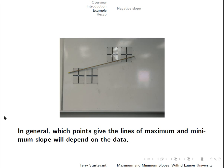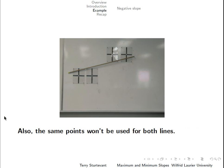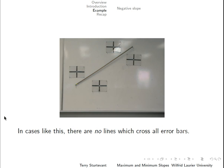In general, the points that give the line of maximum-minimum slope will depend on the data, and it won't necessarily be the same points for the line of maximum slope as for the line of minimum slope. In a case where it's obvious that there's no line that crosses all the error bars, the uncertainties have to be determined using standard errors, not using lines of maximum and minimum slope.